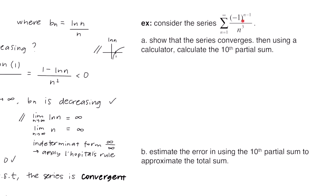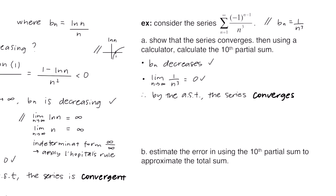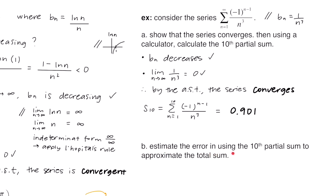This example says consider the series negative 1 to the n minus 1 over n cubed. Part A says show that the series converges, then using a calculator calculate the 10th partial sum. We note b sub n equals 1 over n cubed. As you plug in 1, 2, 3, 4, the terms decrease. The limit as n gets larger of 1 over n cubed goes to 0. So by the alternating series test the series converges. To find the 10th partial sum s sub 10, we compute sigma from 1 to 10 of the formula and get approximately 0.901.